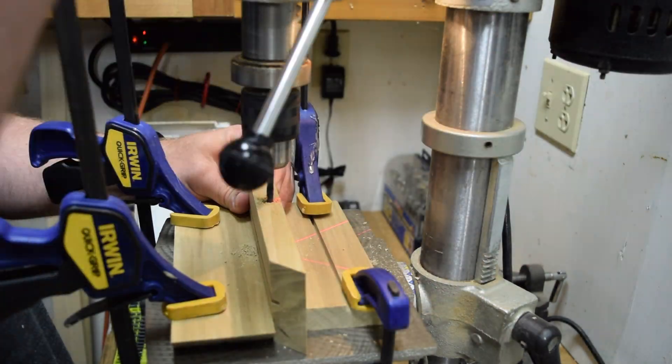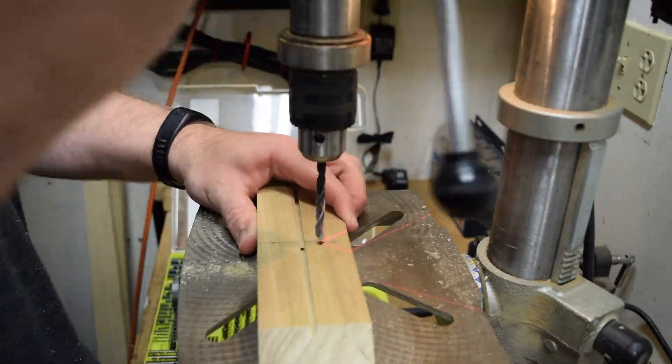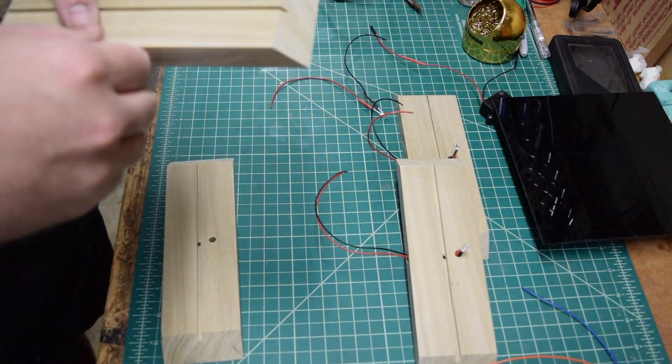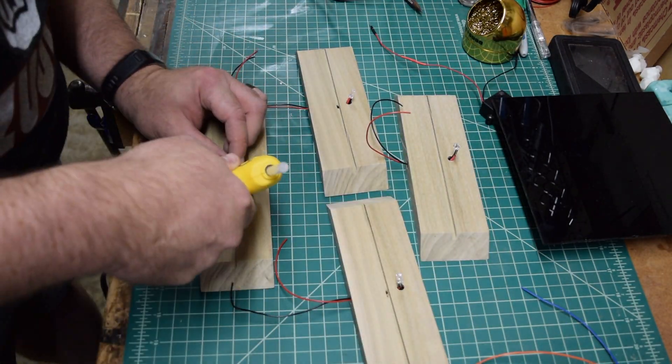Vertical channels were then drilled to allow leads to reach the board under the Lexan rolling surface. Pre-assembled LEDs with leads were threaded into the holes and hot glued in place.